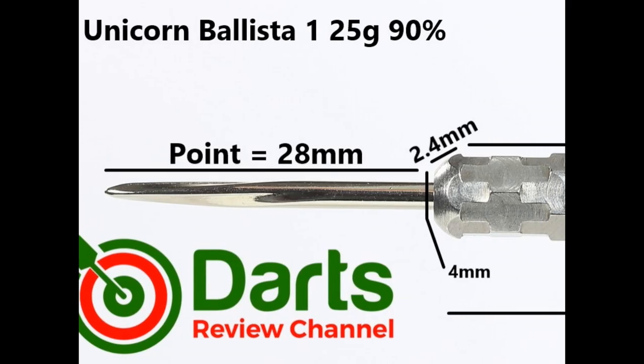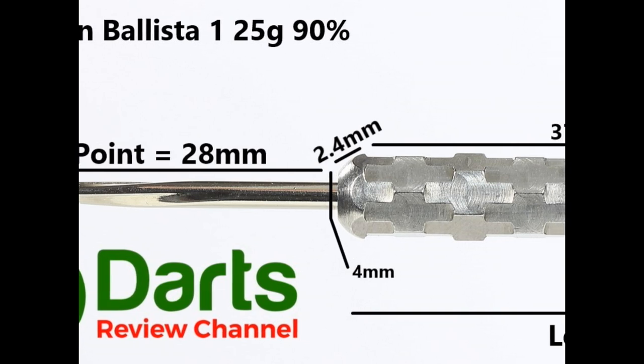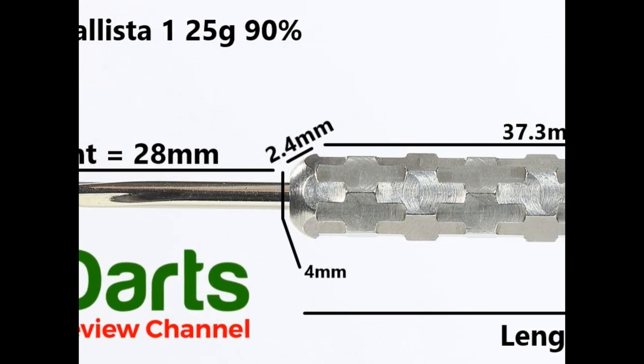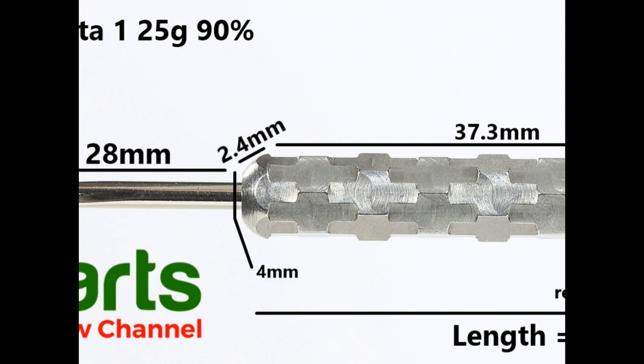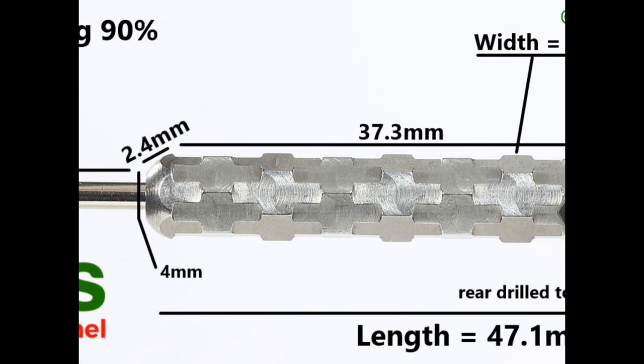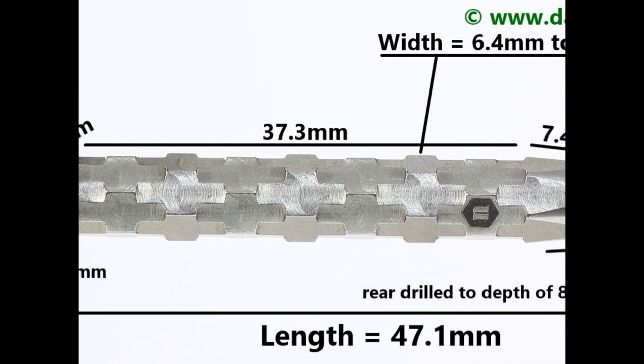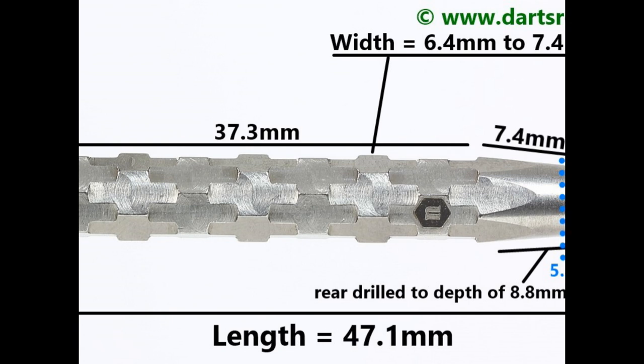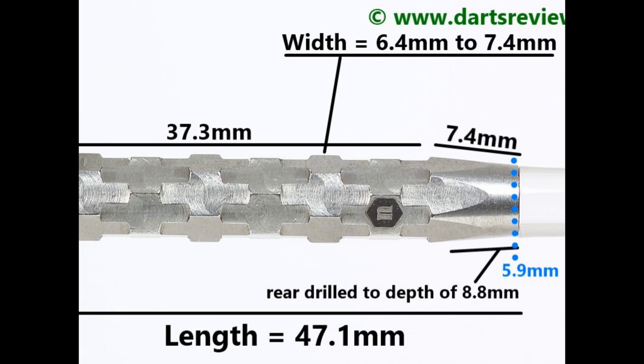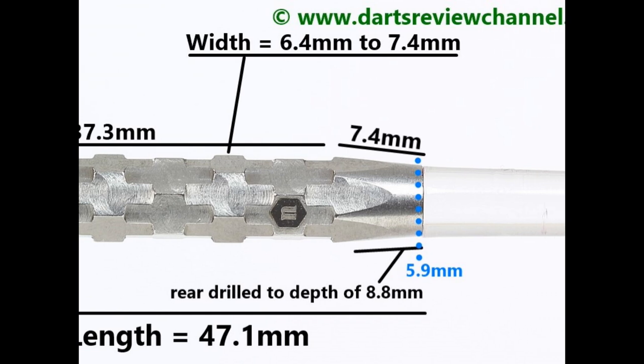The darts fit with a 28 millimeter volute silver point, there's a slight taper and the ball nose that's 2.4 millimeters, and then you've got the hex grip which is around 37.3 millimeters, and then there's a tapered section at the end with an arrowhead cut that's 7.4 millimeters. Length 47.1 millimeters, width varies 6.4 to 7.4.